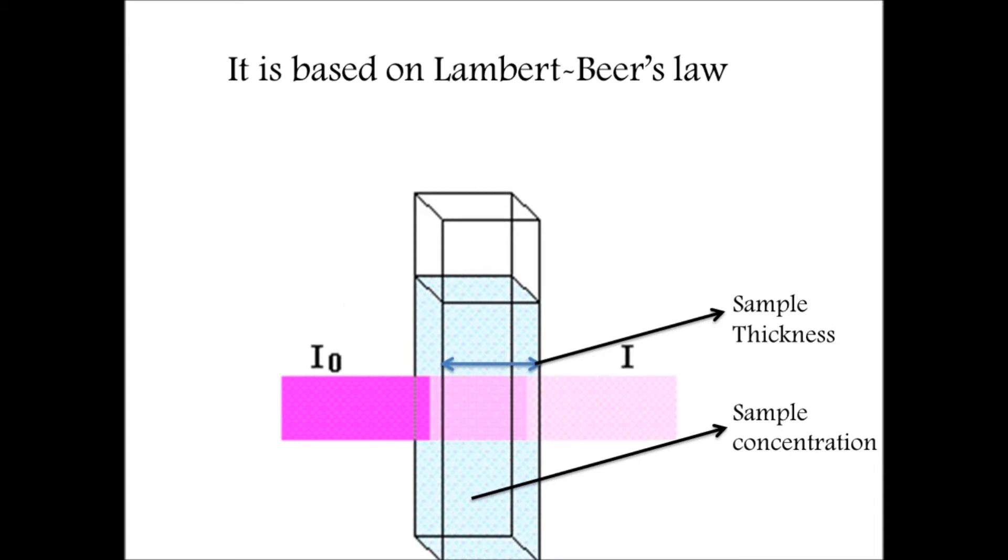I0 is the incident light and I is the transmitted light. The absorbance can be measured by detecting the transmitted light intensity from the sample using a detector.